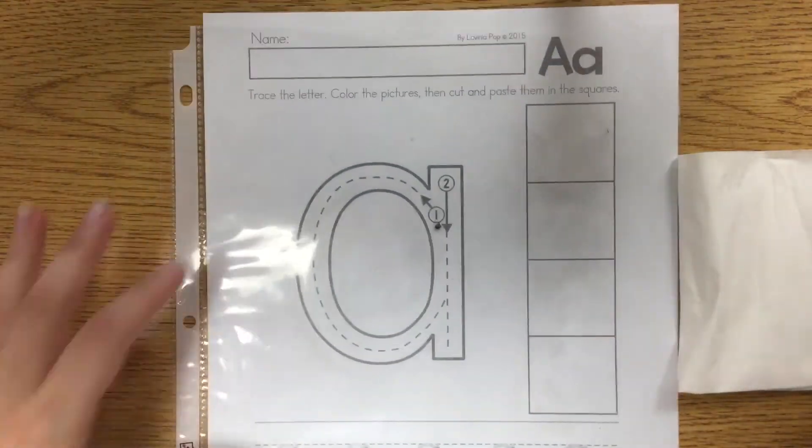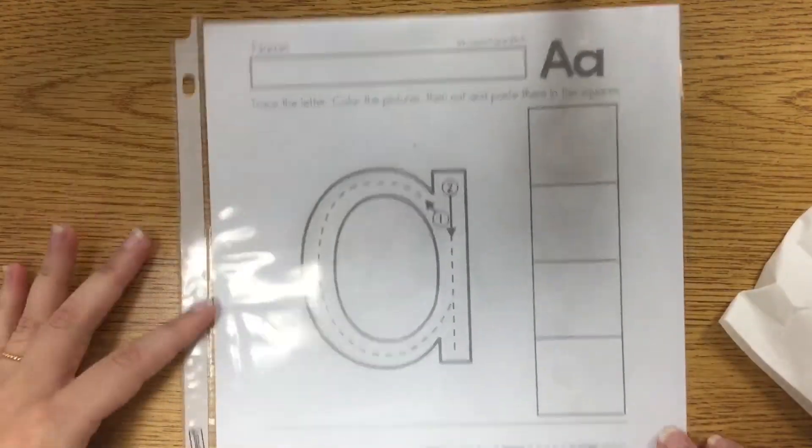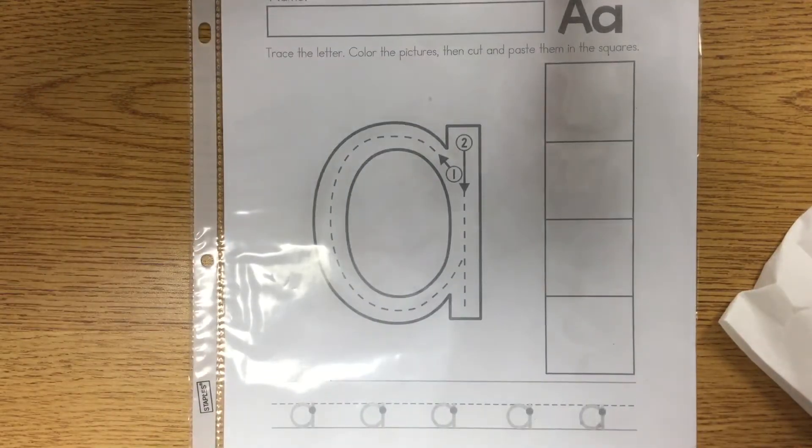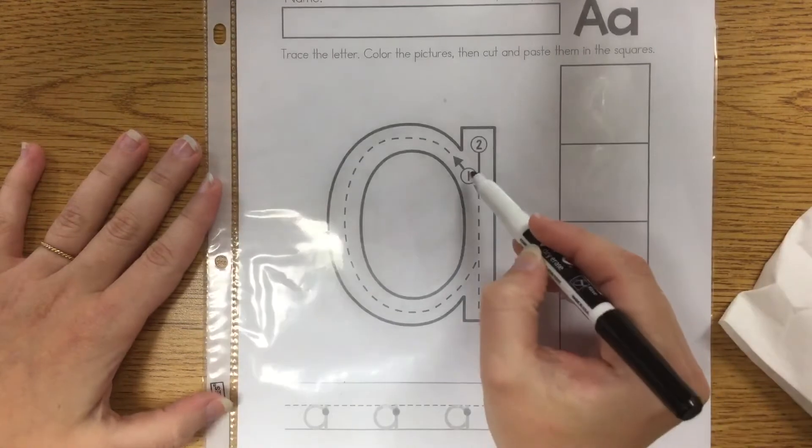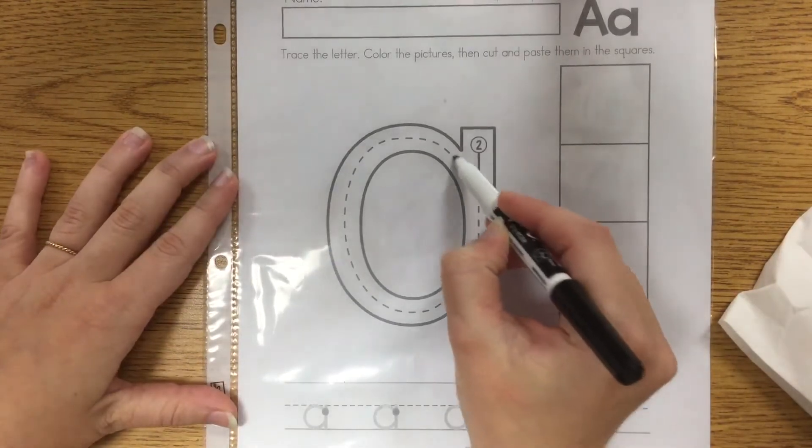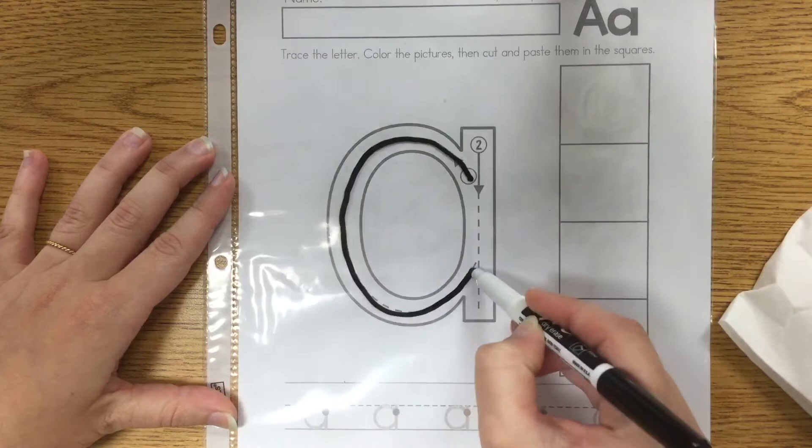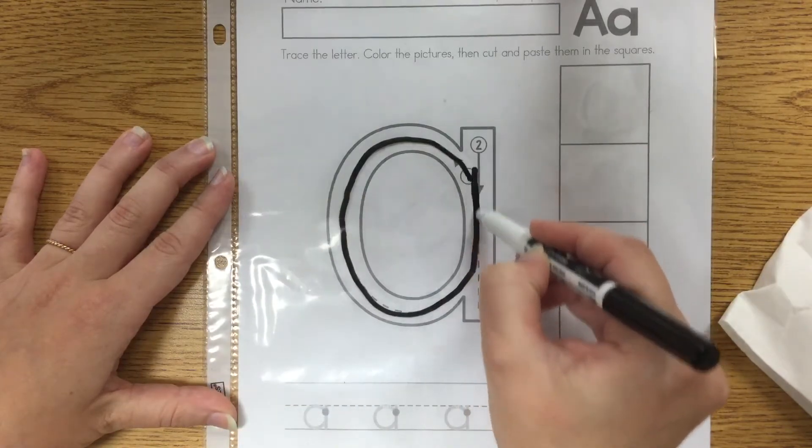So this is the newer one that I'm going to send home. Either you've already gotten it or you will get it on Friday. So for the A, what I have the kids say is we start on the number one. We go around like a C, close and down.